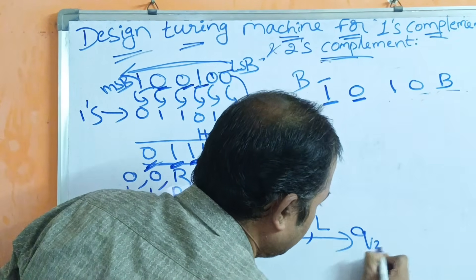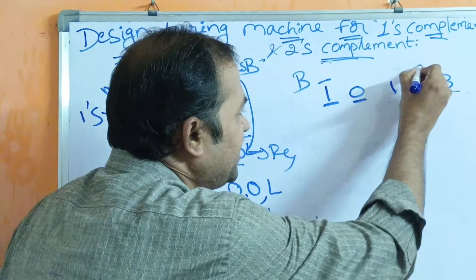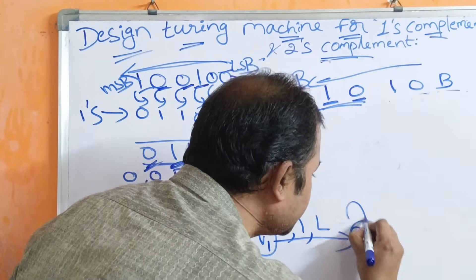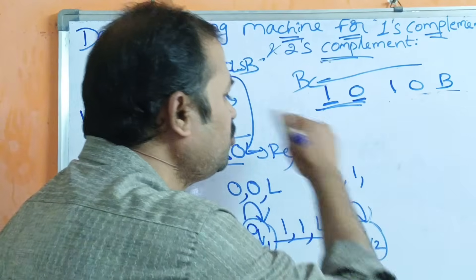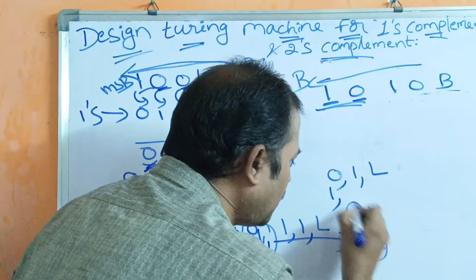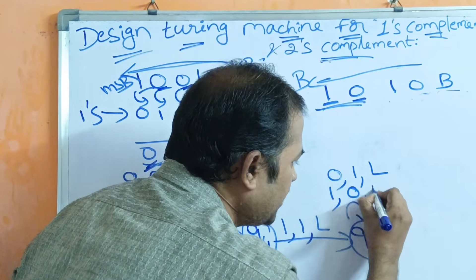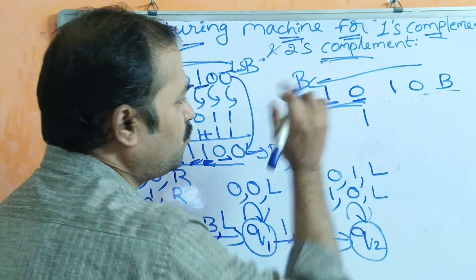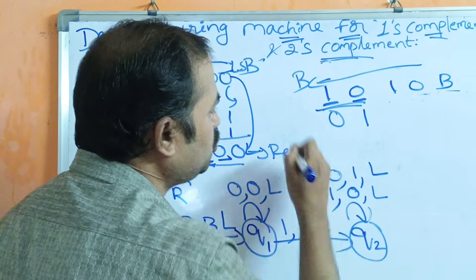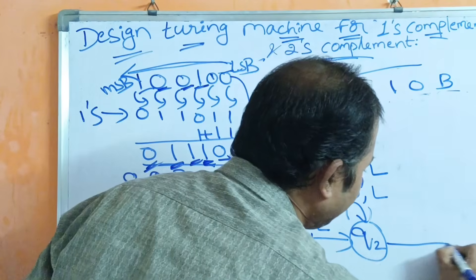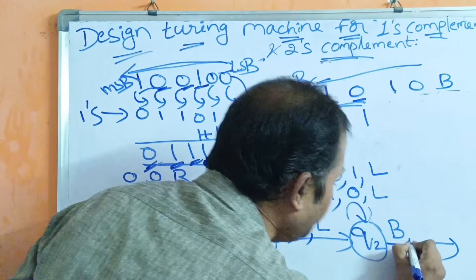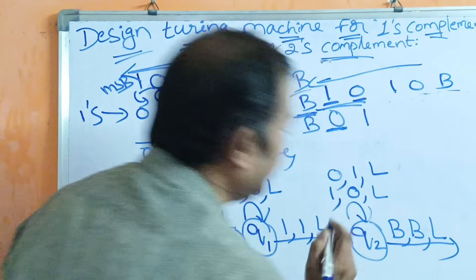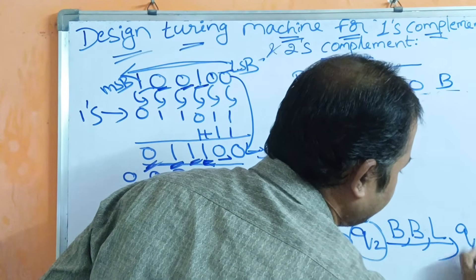Now the head is at q2. After the first 1, reading from the LSB, we invert the remaining bits. On q2, if we read 0, convert to 1 and move the head towards the left. If we read 1 on q2, convert to 0 and move the head towards the left. So 0 is converted to 1, then 1 is converted to 0. Now we are at the blank symbol on q2 — keep as blank and move the head towards the left.